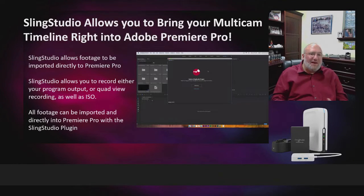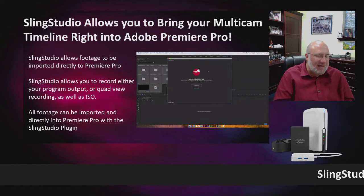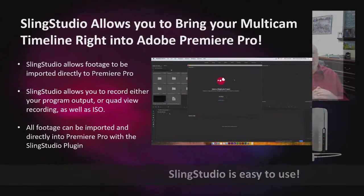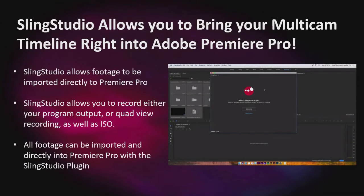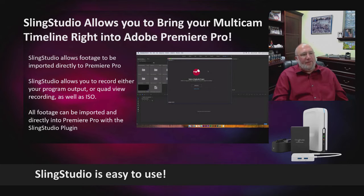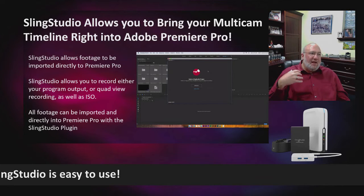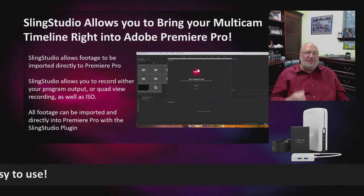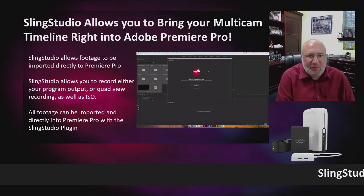The next feature I want to talk about is this secret sauce feature that I just absolutely love. If you watch our programs, you know that we go live on Facebook and YouTube, and then we edit our videos down for YouTube — making shorter clips, highlight clips, or bringing them into other videos. One of the features of Sling Studio is a plugin that plugs directly into Adobe Premiere.